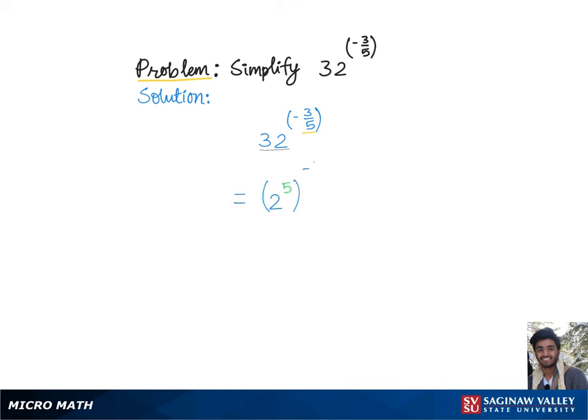Now we'll further simplify this using the rule of exponents, according to which we simply multiply the powers. So our problem becomes 2 to the 5 times negative 3 fifths. Now these 5s cancel each other out since one is in the numerator and another in the denominator, so we are left with 2 to the negative 3.